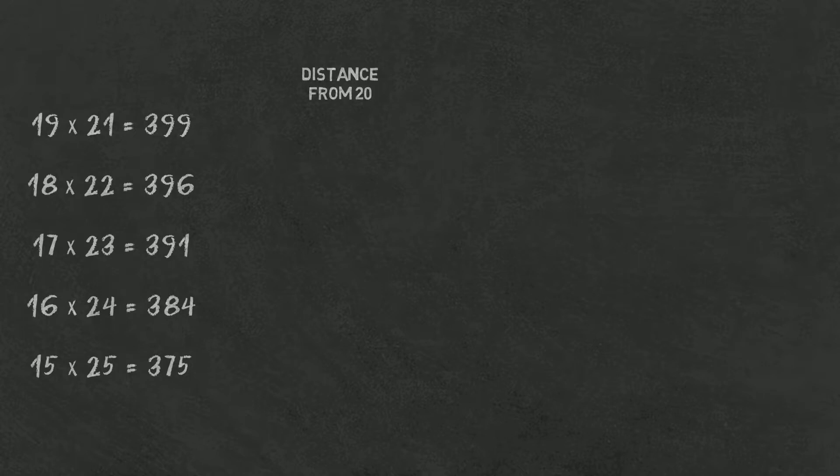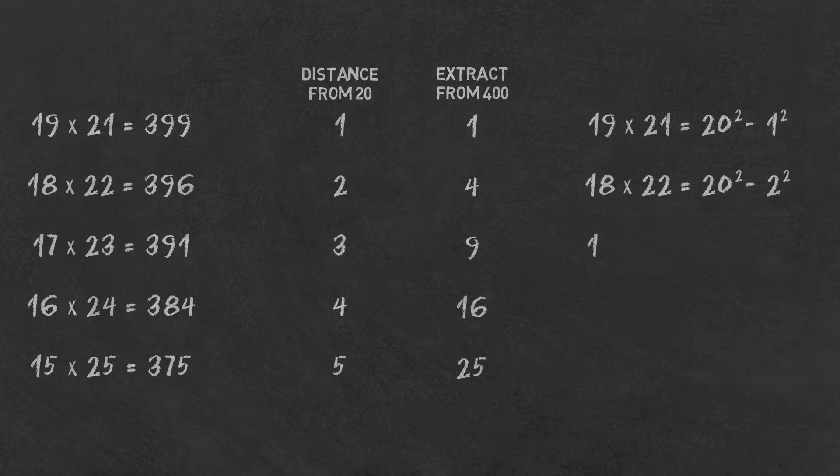Now let's note down the distance from the middle 20. It's 1, 2, 3, 4, 5. If now we square this distance and extract it from square of the middle, so 20 squared is 400, we will get the final result as you can see in this table. And so 18 times 22 is the same as 400 minus 2 squared, 17 times 23 is the same as 400 minus 3 squared, and so on.